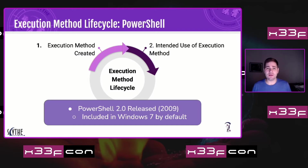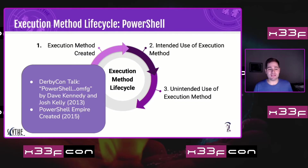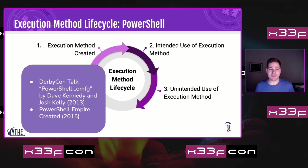The next step is what you can probably guess: the information security community found unintended use of the execution method. Research happens before publishing, so these things probably occurred years before the talks. A key DerbyCon talk by Dave Kennedy and Josh Kelly in 2013 highlighted PowerShell abuse. Then Empire was one of the first well-known command and control projects focused on post-exploitation with PowerShell, as opposed to Metasploit. Cobalt Strike made C2 a big topic, but PowerShell Empire was one of the first widely used ones.